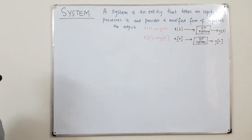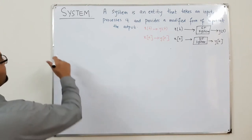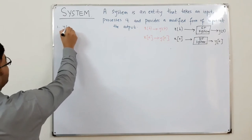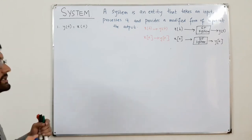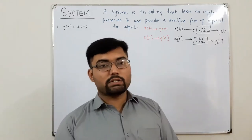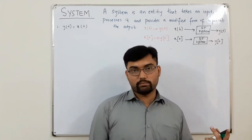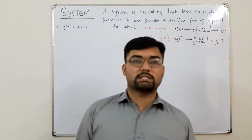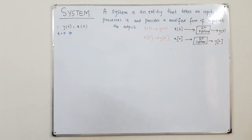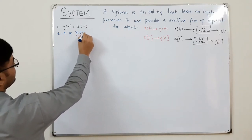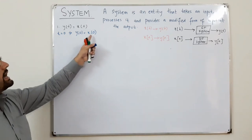Now something very important: the basic types of systems based on input-output dependency. Taking the first example, y(t) = x(t). Setting the reference at t=0, we get y(0) = x(0), which means the output at the present value depends on the present input.